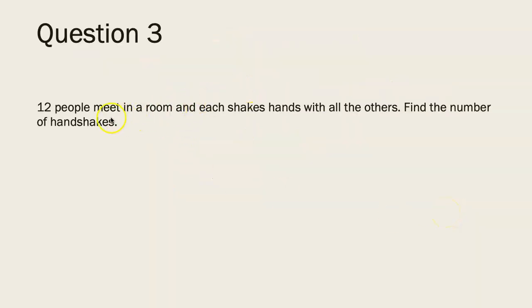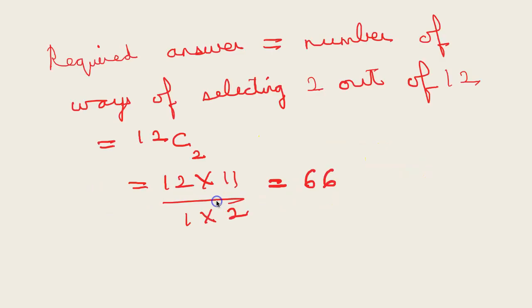Question 3: 12 people meet in a room and each shakes hands with all the others. Find the number of handshakes. We are finding the number of ways of selecting 2 out of 12, because at a time only 2 people can shake hands. So we are selecting the pairs out of 12. That is 12C2 which is 12 into 11 by 1 into 2 which is 66.